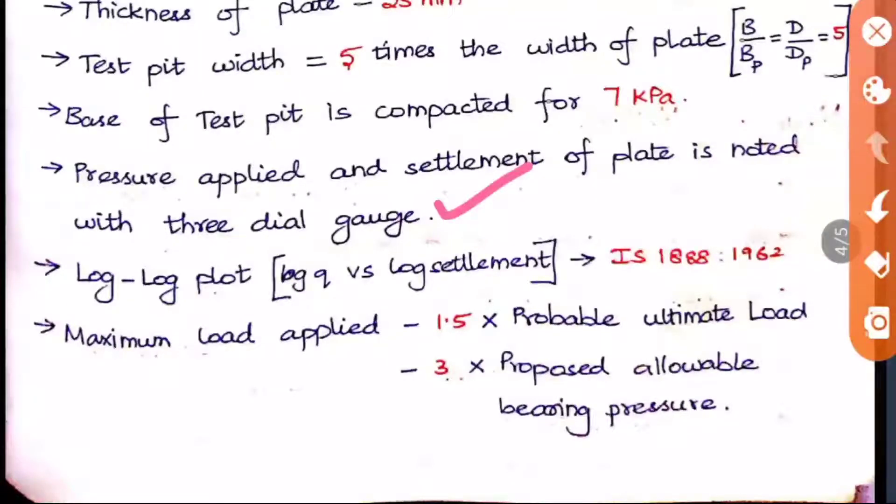The graph should be in a log-log plot, that is log Q in the x-axis and log settlement in the y-axis, based on IS 1888-1962. Why this log-log? We prefer log-log when the values are very closer to each other and they are very smaller values. Here the settlement and pressure changes will be very minute, so we go for this plot. The maximum load applied is 1.5 times the probable ultimate load and 3 times the proposed allowable bearing pressure. These are some important points to be studied when you are looking into the plate load test. I am telling these in the view of the objective question, so these points are very important.